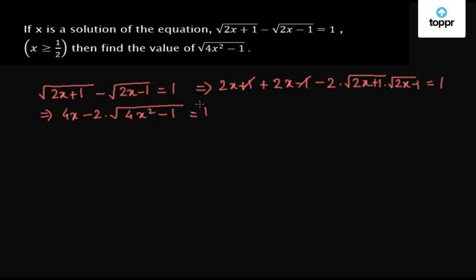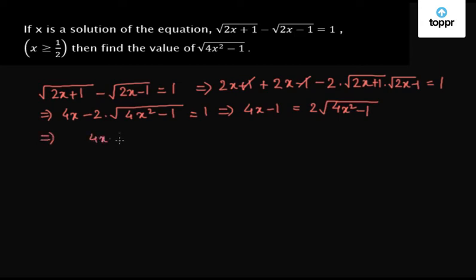Now we take 1 from the right hand side to the left hand side, and the square root term to the right hand side, to get 4x minus 1 equals to 2 into root over 4x squared minus 1. Now squaring on both sides of the equation, we get 4x minus 1 whole square equals to 4 into 4x squared minus 1.